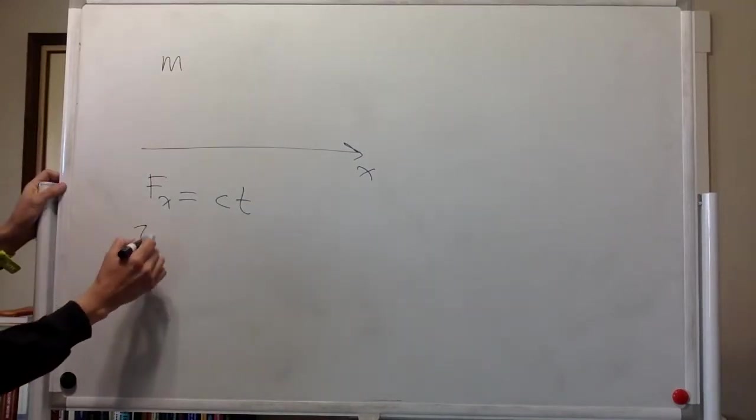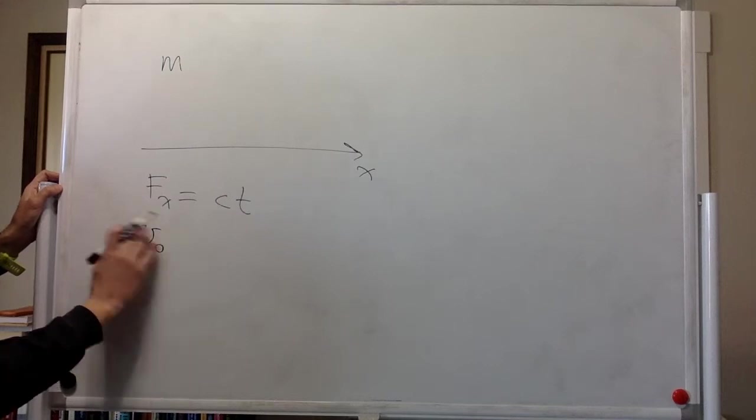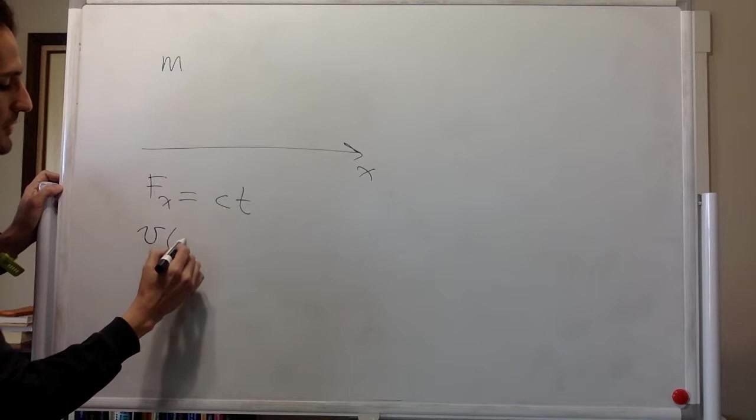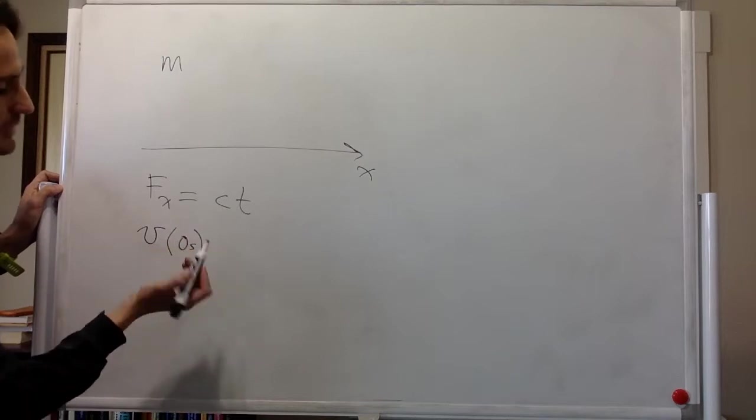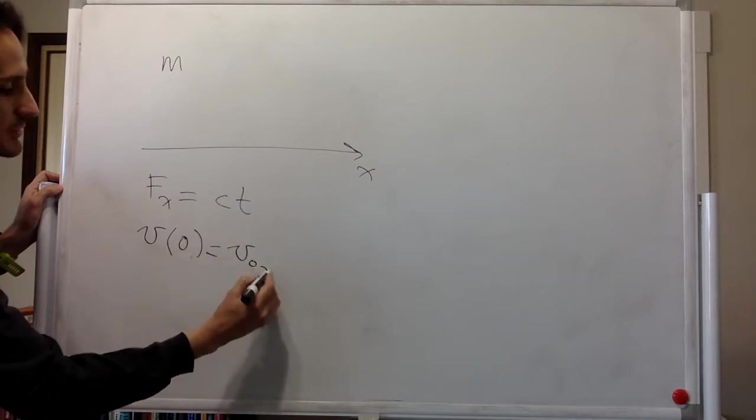We're told that the particle has a velocity. So there's a correct way to write it. The velocity of the particle at zero seconds is v0x.